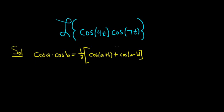So in this problem, our a is equal to 4t, and our b is equal to 7t. So we have the cosine of 4t times the cosine of 7t.